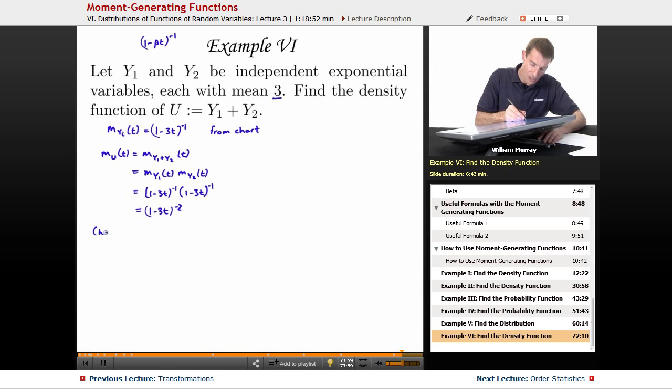And again, I'm going to look back at my chart and say, do I recognize this as the moment generating function for any of my known distributions? And if you look back at the chart, you'll see that the gamma distribution does have a moment generating function of 1 minus beta t to the negative alpha. So what I have here is a gamma distribution with alpha is 2 and beta is 3.